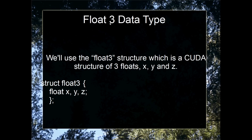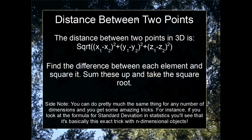Let's talk about the float3 data type — it's just a structure with three floats: X, Y, and Z. It's natural to use for defining 3D points. The distance between two points in 3D space uses Pythagoras: if the first point is (X₁, Y₁, Z₁) and the second is (X₂, Y₂, Z₂), then the distance is the square root of (X₁−X₂)² + (Y₁−Y₂)² + (Z₁−Z₂)². This gives you a single floating point distance value.